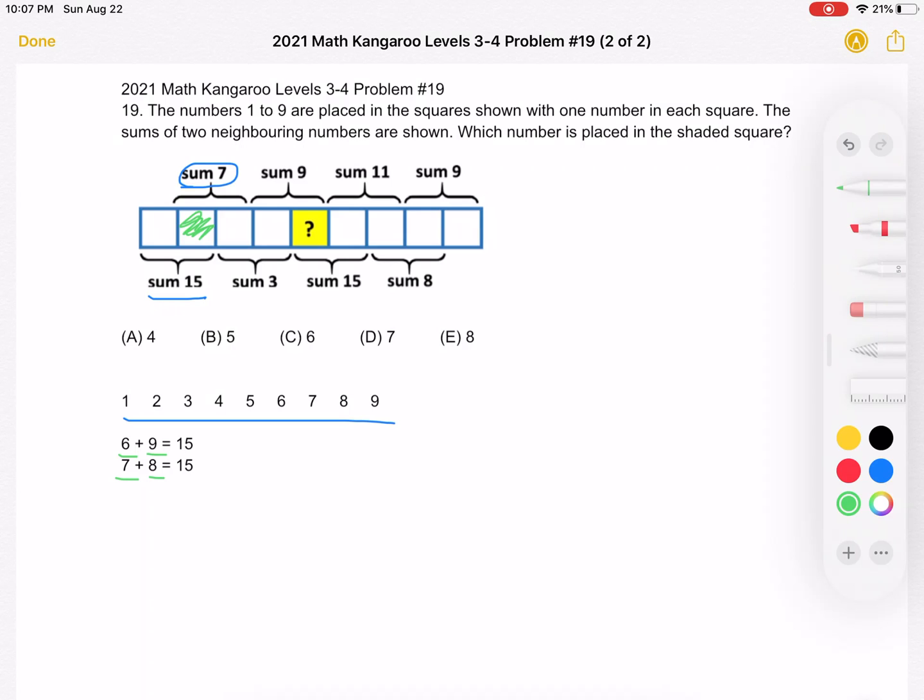Well, we realize that the only one of those numbers that can be there and add up with something else to a sum of 7 is 6. 6 is the only number that can be in that square so that you can have both a sum of 15 with it and a sum of 7. If the number is greater than 6, you can't have a sum of 7 because all of our numbers are positive and we're adding them together.